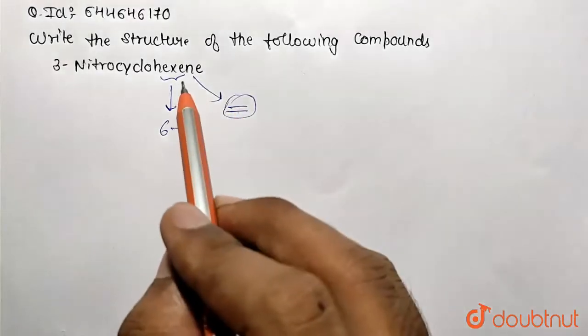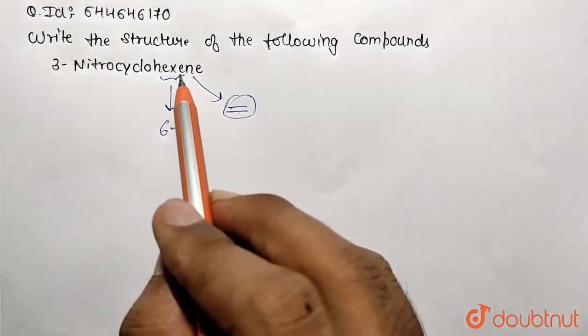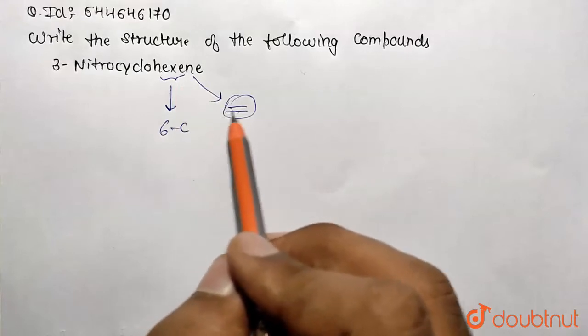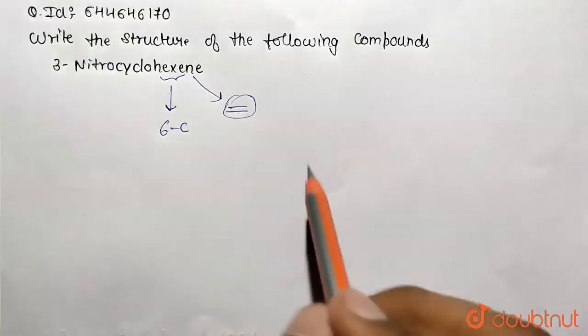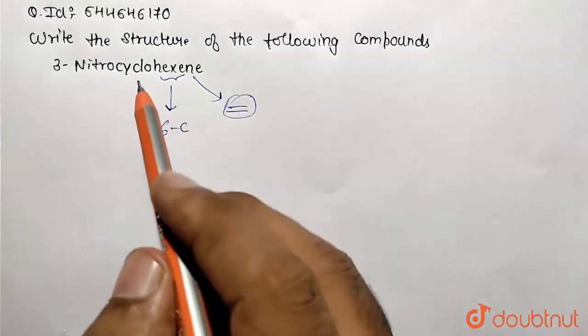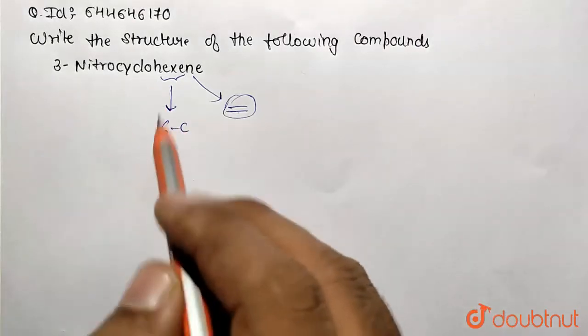on carbon one because the position is not given, so by default it's on the first carbon. The double bond is between the first and second carbon. 'Cyclo' means it's a cyclic molecule.